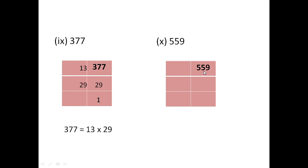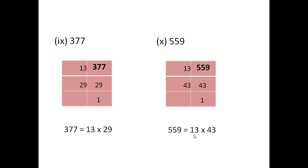Then the next prime number after 11 is 13. When you do the actual division, you will find 559 is divisible by 13. So, we will take the prime factor as 13. When you divide 559 by 13, you will get 43. Now, 43 is also a prime number. So, you will take 43 once as 43. Write it in product form: 559 is 13 multiplied by 43.